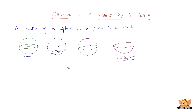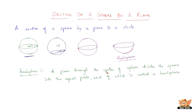A plane passing through the center of a sphere divides the sphere into two equal parts, because it is right through the center. So it divides the whole sphere into two equal parts. If you take just one part, this is called a hemisphere. Formally defined: a plane through the center of a sphere divides the sphere into two equal parts, each of which is called a hemisphere.